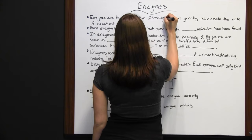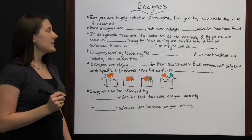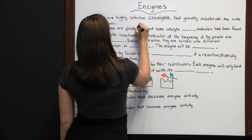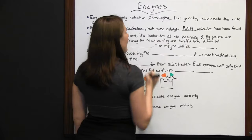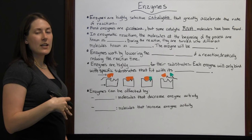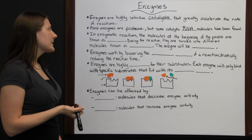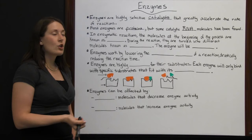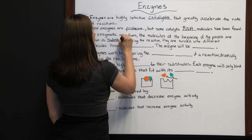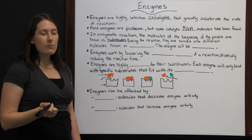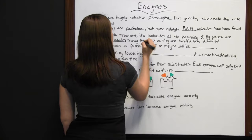Enzymes are highly selective catalysts that greatly accelerate the rate of reactions — they speed up how quickly a reaction takes place. Most enzymes are proteins, but some catalytic RNA molecules have been discovered that also catalyze reactions. In enzymatic reactions, the molecules at the beginning of the process are known as substrates, and these substrates are turned into different molecules known as products.